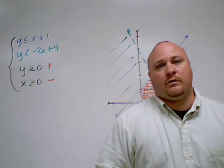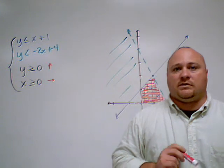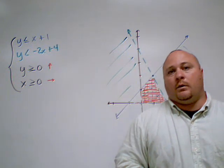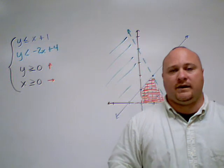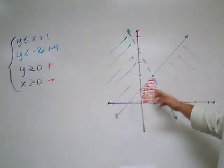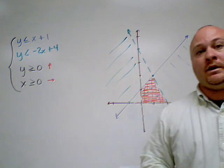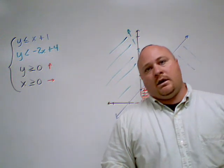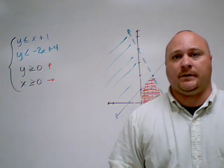Like I said, the hard part with what we were doing is just graphing, finding the test point, and knowing where to shade. So hopefully that helps clear some of that up, and hopefully this helps illustrate where our shaded region is going to be. That's our feasible region. And if you have any more questions, please let me know.